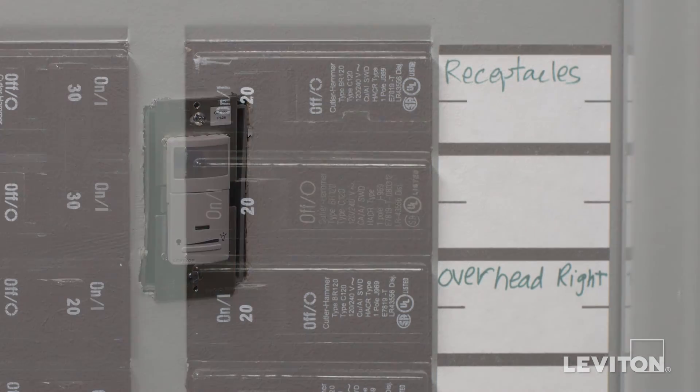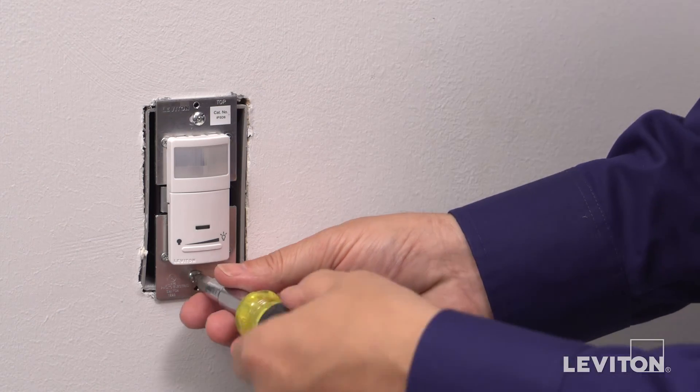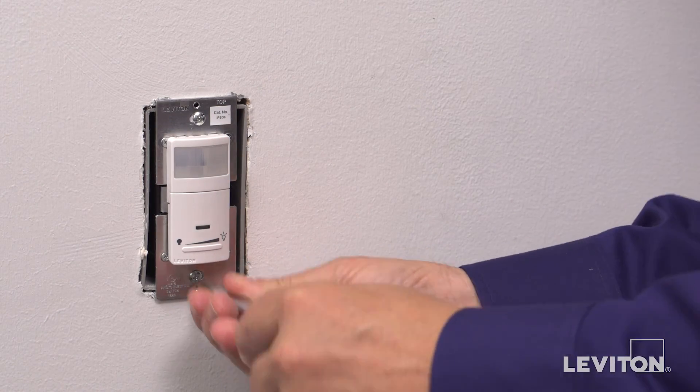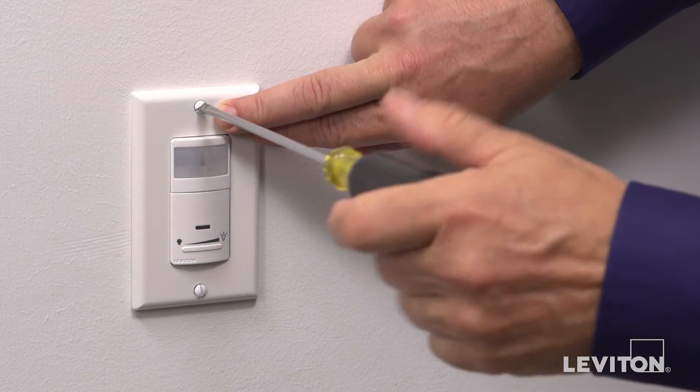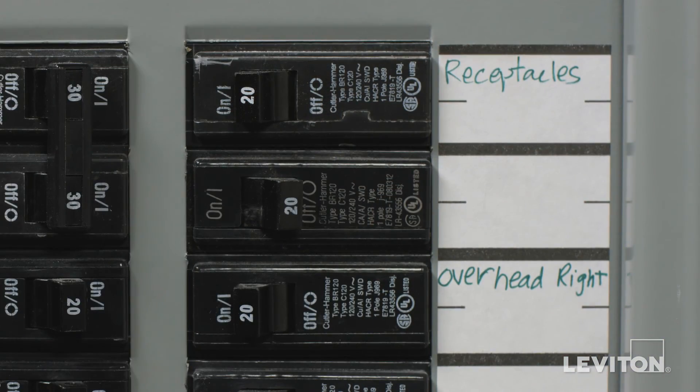Turn power off at the circuit breaker. Tighten the mounting screws into the wall box. Attach wall plate. Restore power at the circuit breaker.